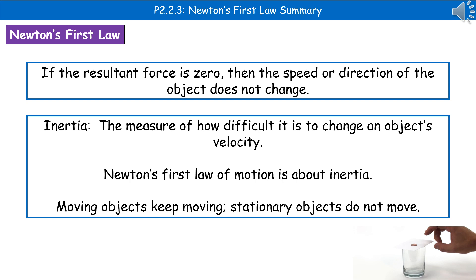A word that you might see used in association with this is the word inertia, which is a measure of how difficult it is to change an object's velocity. And what we're really looking at in Newton's First Law of Motion is inertia.